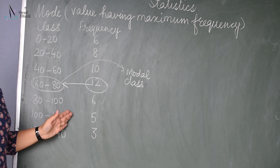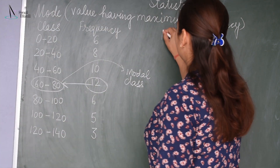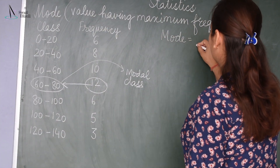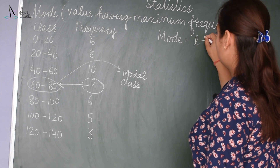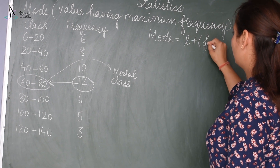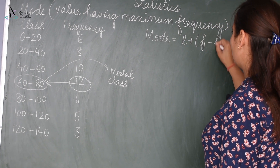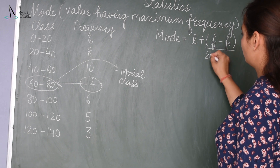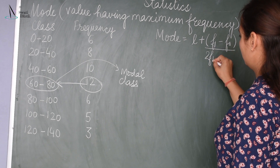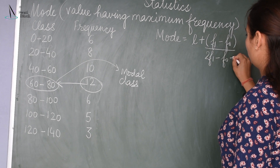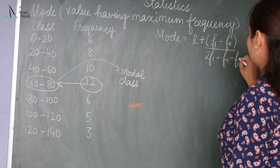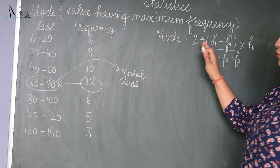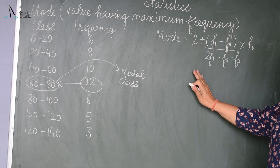To find out the mode, we have the formula: Mode = L + (F1 − F0) divided by (2F1 − F0 − F2) into H. We have to find all these parameters.